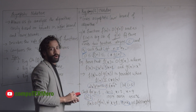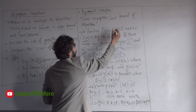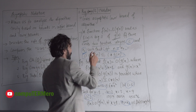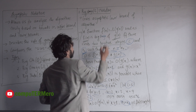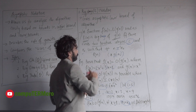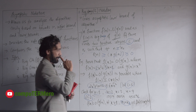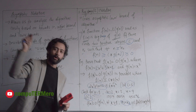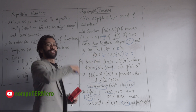Big Omega represents the lower bound. f(n) is equal to Omega of g(n). The value changes accordingly for the lower bound condition.